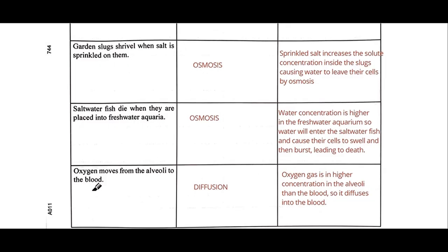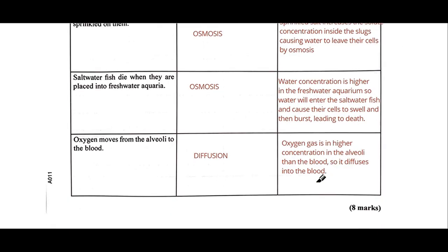The fourth observation: oxygen moves from the alveoli to the blood. The alveoli are the tiny air sacs in the lungs of the respiratory system. This is an example of diffusion — here we're looking at a gas diffusing rather than solutes. Oxygen is at a higher concentration in the alveoli compared to the blood, so through diffusion it moves across the alveoli and into the blood. That is diffusion of gases — eight marks to complete that table.